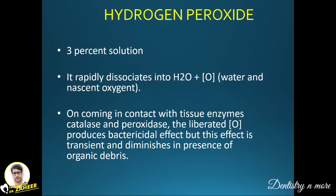Hydrogen peroxide is commonly used as a 3% solution. It rapidly dissociates into water and nascent oxygen. On coming in contact with tissue enzymes catalase and peroxidase, nascent oxygen is produced, which acts as a bactericidal agent. This effect is transient and diminishes in the presence of organic debris, meaning its effectiveness is reduced when organic debris are present.